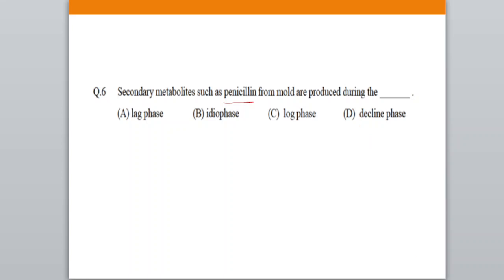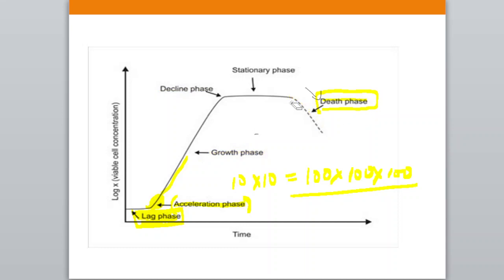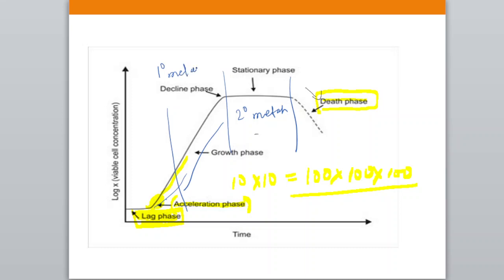Your answer is option B — idiophase. Idiophase is another name for your stationary phase. In this chart, your idiophase will be in the stationary phase region. In idiophase or stationary phase, secondary metabolites develop. In the log phase — which you can also call the trophophase — primary metabolites form.